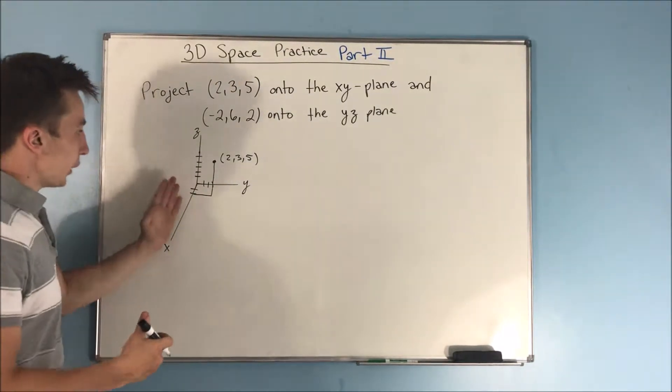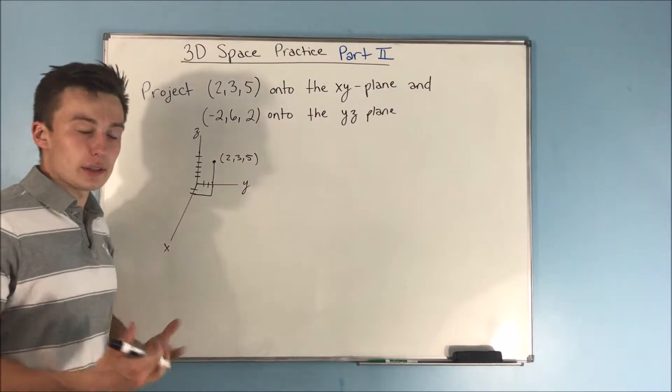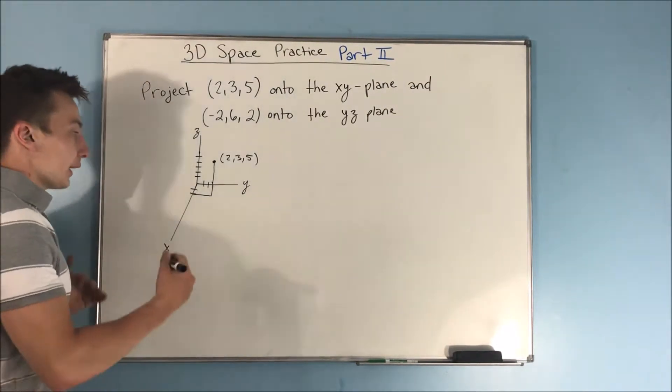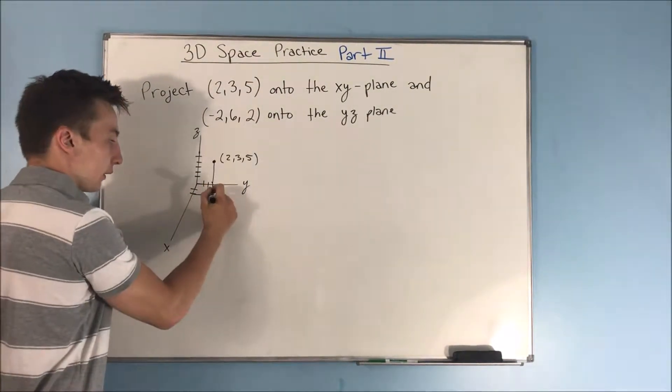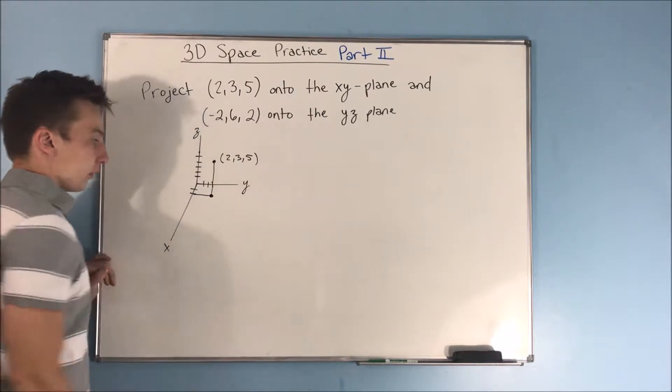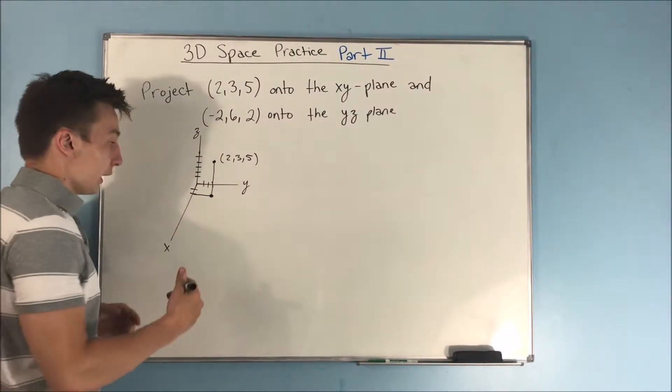So this dimension, this Z dimension, is not really apparent. So if we're projecting this down on the XY plane, this moves down to here. It just moves down onto that XY plane.